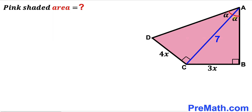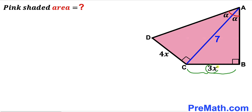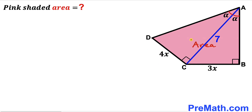Both of these angles are alpha each. Moreover, both of these right triangles share this side AC and the length of this side is 7 units. Furthermore, this side BC is represented by 3x whereas this side CD is 4x, and now our task is to calculate the area of this pink shaded region — this area and this area combined.